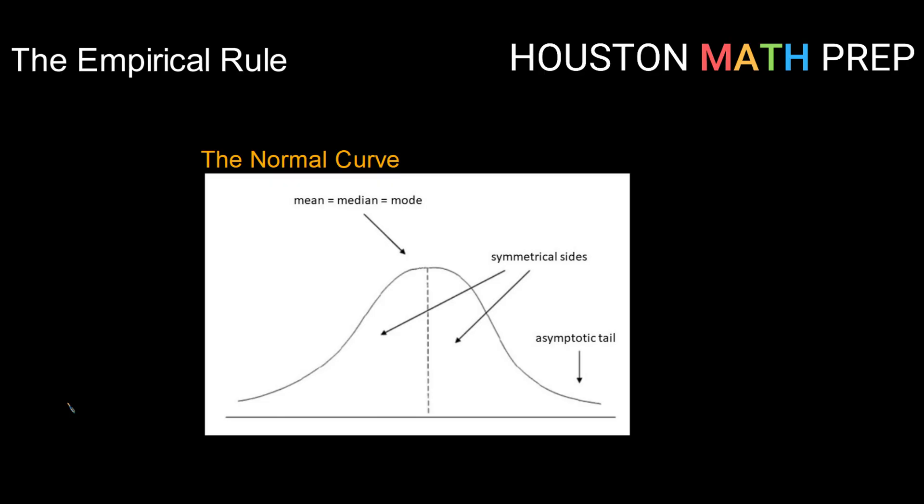So the empirical rule has to do with a particular type of distribution that has a particular type of curve. The curve is called the normal curve, capital N, normal, and that has to do with the normal distribution.